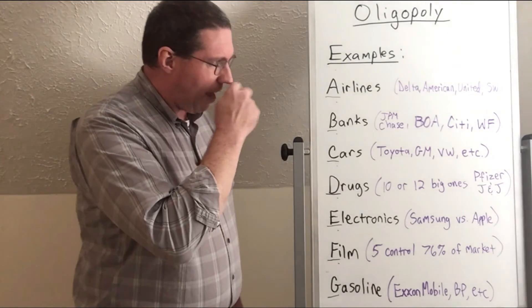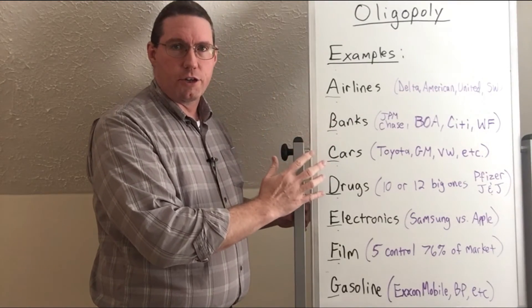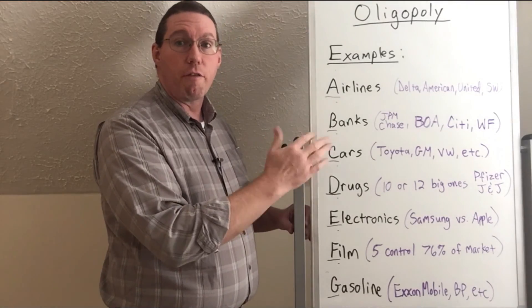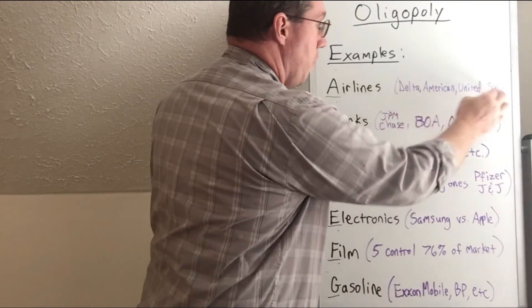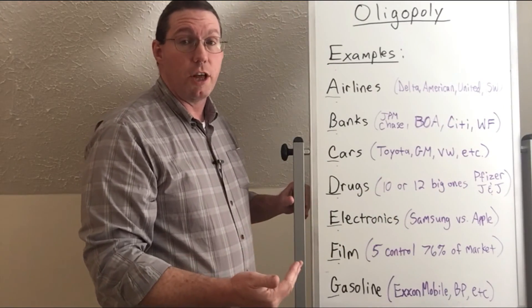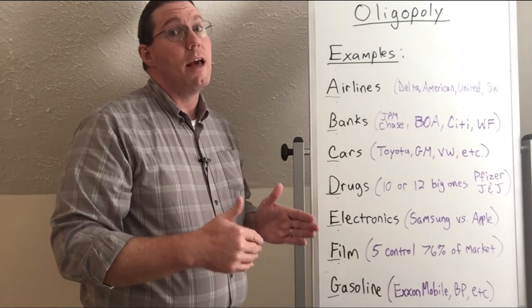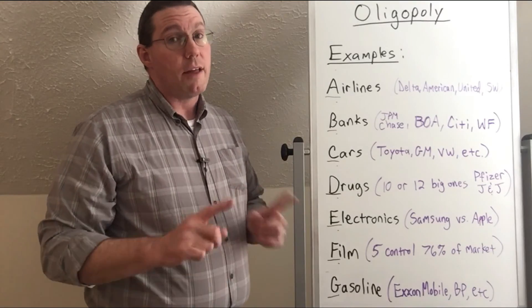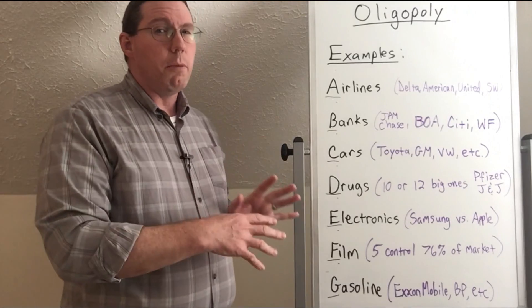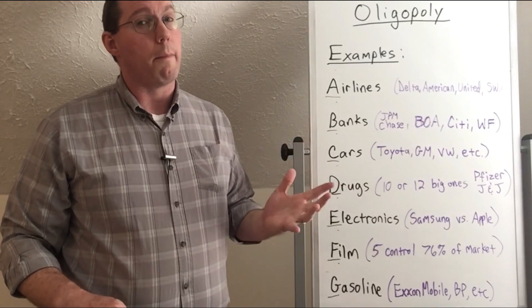What I want to show is the idea that there aren't many companies in these industries. These are families of sorts — airline companies are like siblings. They fight with each other, they compete with each other, but they also cooperate with each other. That's what siblings do: they cooperate sometimes and they compete sometimes. So that's what we're going to talk about next — the difference in oligopoly: whether the siblings are more likely to compete with one another, or more likely to cooperate with one another.